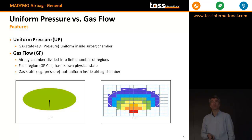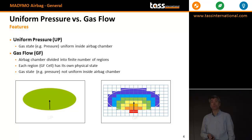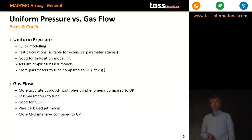Another main keyword is uniform pressure versus gas flow. Uniform pressure means that pressure is everywhere the same inside the airbag — you see an example at the left picture. This is typically used for in-position load cases. On the other hand, at the right side you see gas flow. In this case the airbag is split up into several cells — it can be millions of them — and that is what we use with gas flow. It's typically used in out-of-position cases. You can imagine this also requires much more computational effort, so long run times.